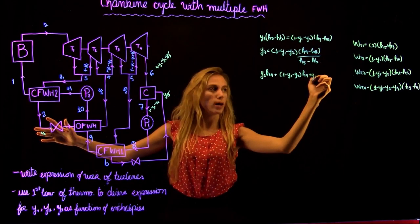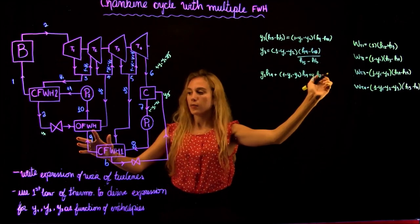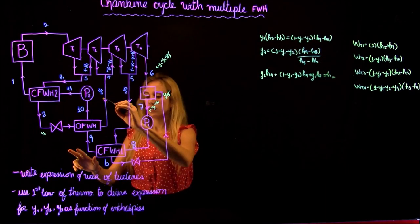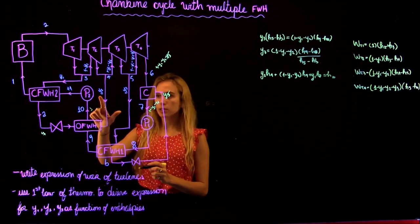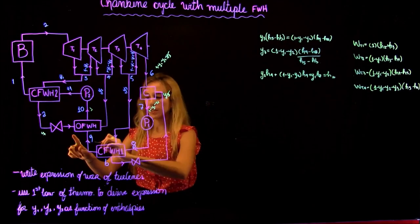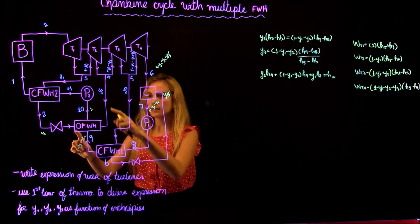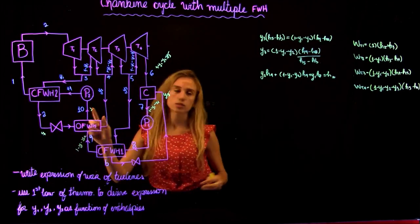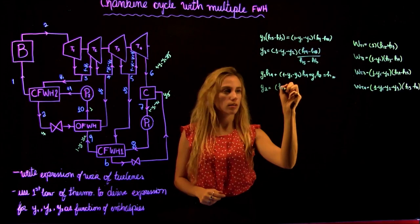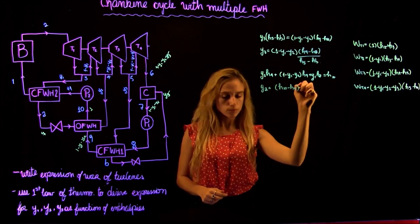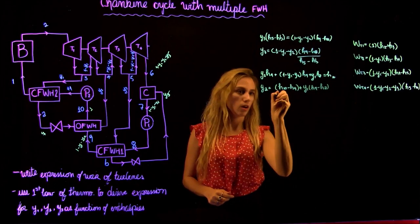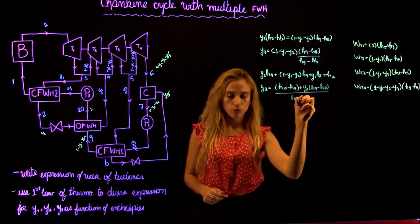We have 100% coming out at H10. This is because Y2, Y1, and 1 minus Y1 minus Y2 all sum to 1. Solving for Y2: Y2 equals (H10 minus H9 plus Y1·H9 minus Y1·HA) over (H4 minus H9).